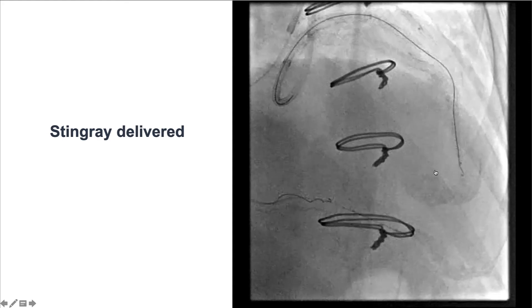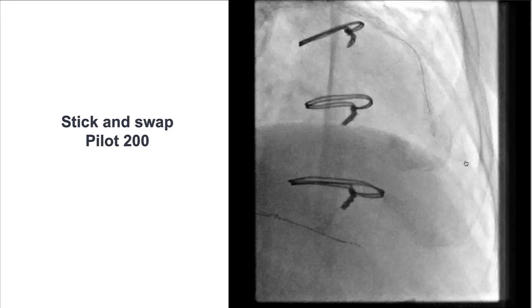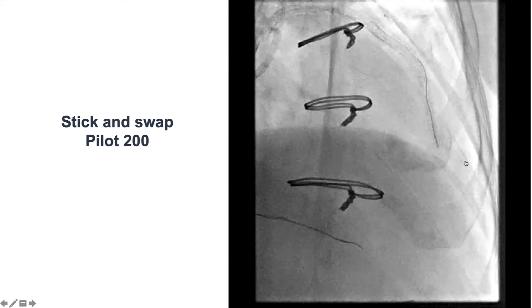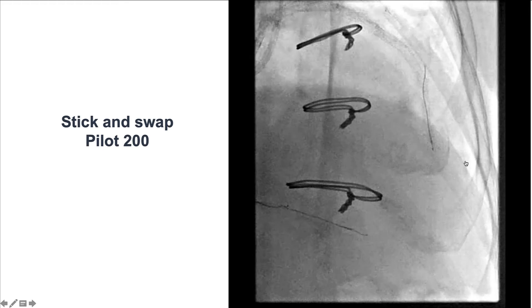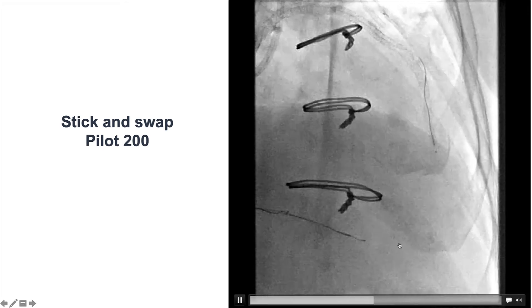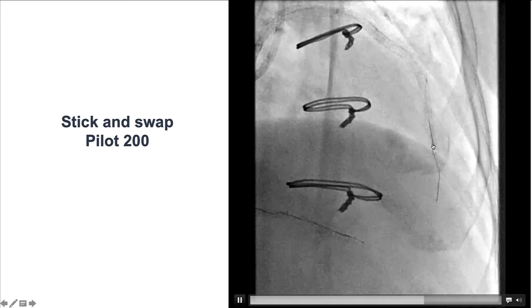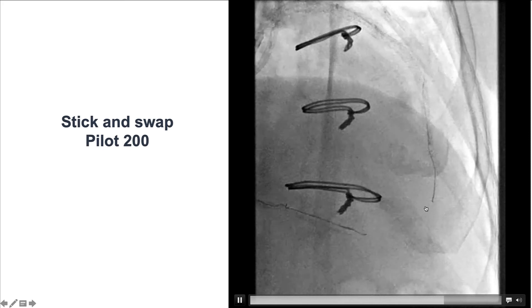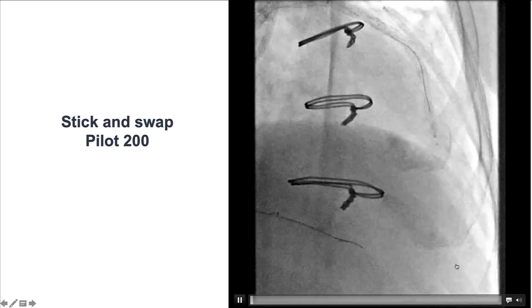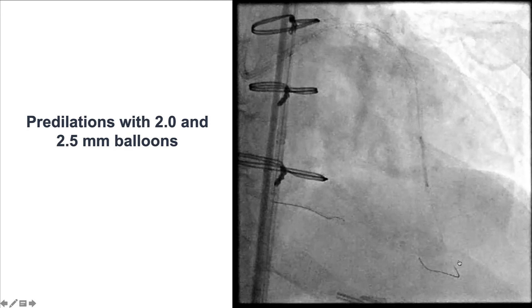We then used the Double Blind Stick and Swap technique, performing sticking through both exit ports and then exchanging for a Pilot 200. After a few re-entry attempts, the Pilot 200 successfully advanced into the distal true lumen, as confirmed by injection from the right coronary artery. We can see it exiting proximal to the proximal marker, then being redirected and eventually coursing down the LAD.